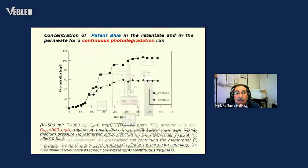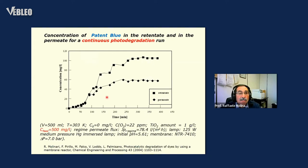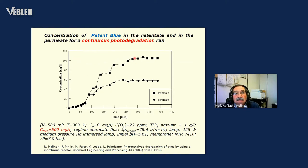When this is an open system, the feed to be treated is continuously added to the photoreactor and the treated water is collected from the permeate. We can see the results concerning the photodegradation of patent blue and also the synergy effect. Against a continuous feed concentration of the dye of 500 mg per liter, the effect of photocatalysis alone gives a concentration in the permeate of around 110 mg per liter, but the benefit of using the membrane means that we collect the permeate outside of the photoreactor — so this is the effect of the membrane.